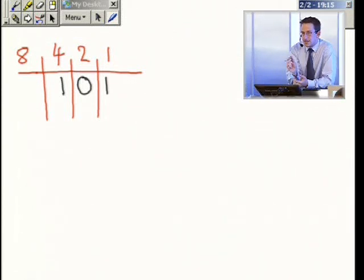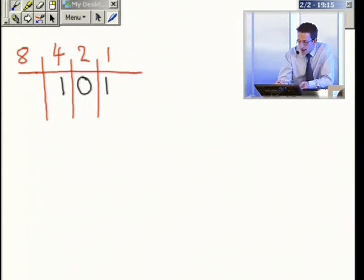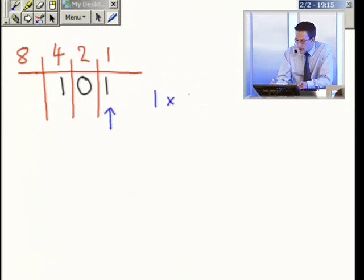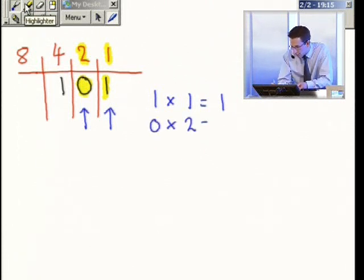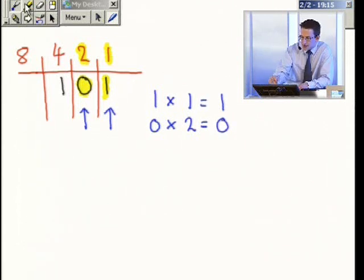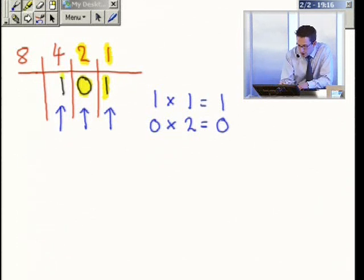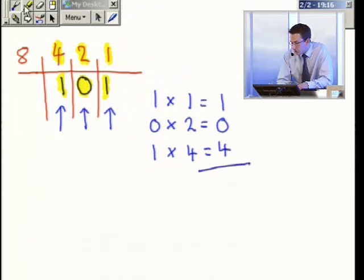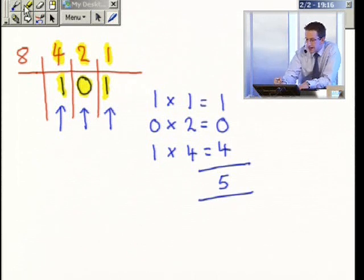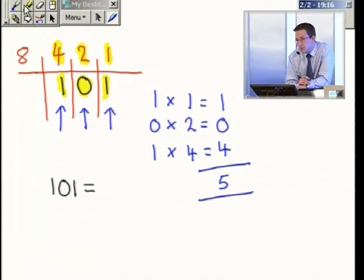So let's think about what this actually means. Everything from this point on is exactly the same as what we did with decimal. I simply say one times one. In other words, I want one of the column one. Gives me one. I then say that I want zero of the column two. So I want zero twos. So zero times two. Gives me zero. The next one I want to do is I want one times four. So one times four. Gives me four. Add them all together. Five. The binary number one zero one has the decimal equivalent of the number five.